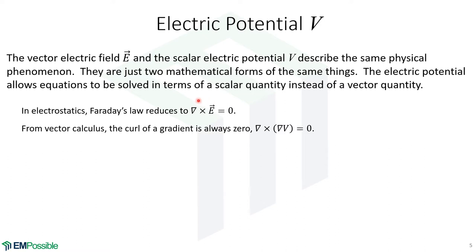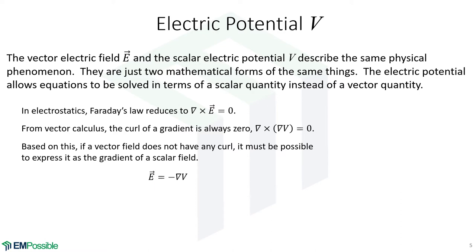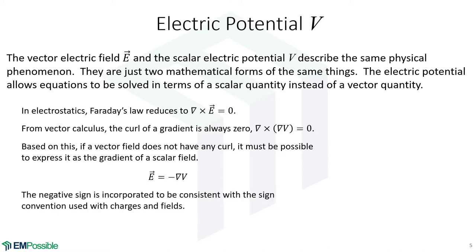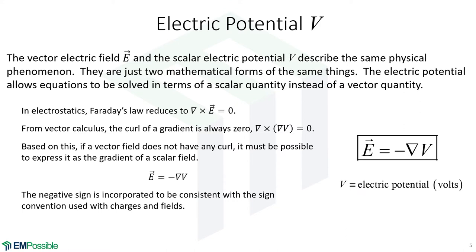Since the curl of E equals zero, we can express the electric field in terms of a scalar quantity. We define the electric field to be the negative gradient of the electric potential. The minus sign is just for convenience to enforce the sign convention — the electric field points from higher potential to lower potential, like field lines extending from the positive terminal of a battery to the negative terminal. The electric potential is measured in volts.